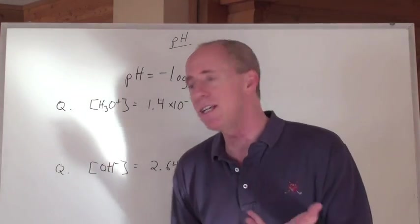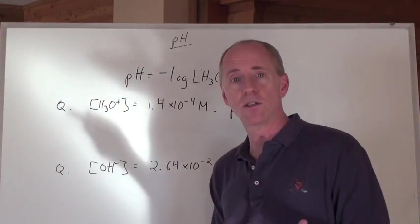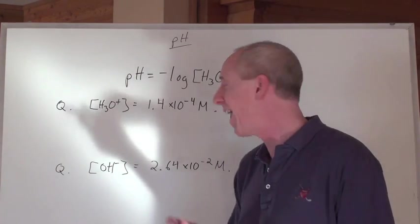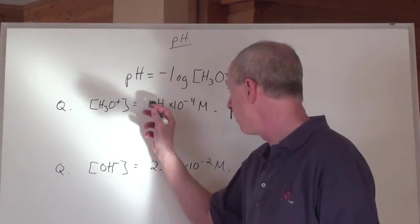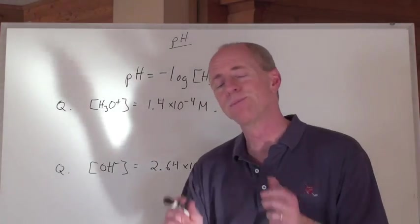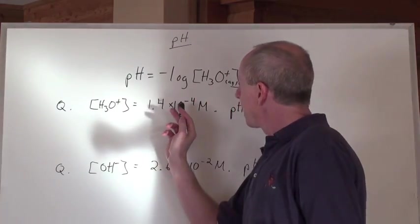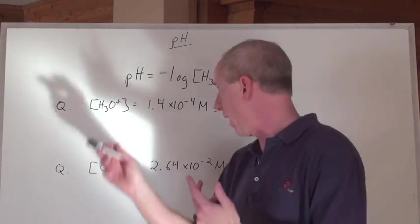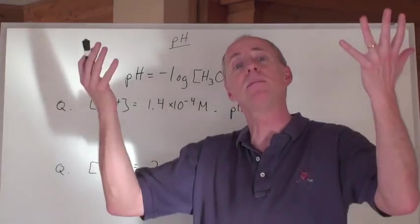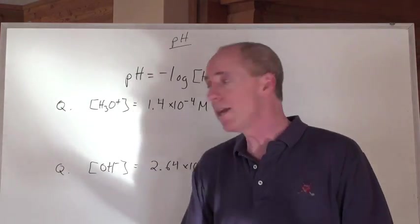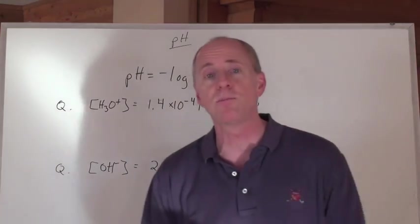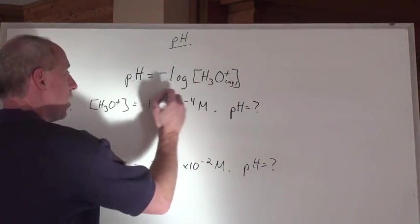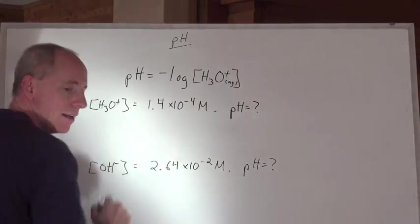That means the hydroxide ion in solution is around 10 to the negative 10 or so, actually about 10 to the negative 11, because the numbers in front are different than 1.0. But 10 to the negative 4 is bigger than 10 to the negative 10, so that means the solution is an acid — you're going to calculate an acid pH. You punch into a calculator this number and take the negative log of that number.